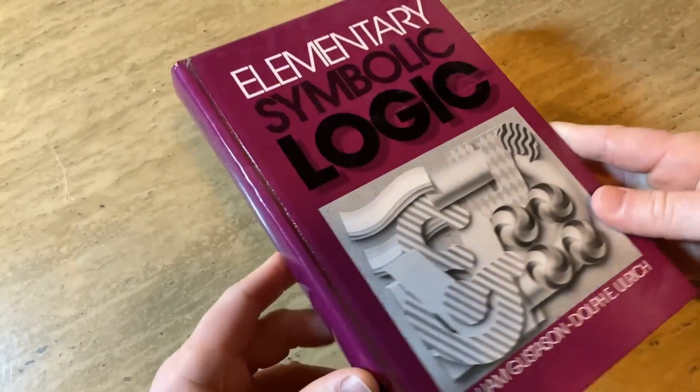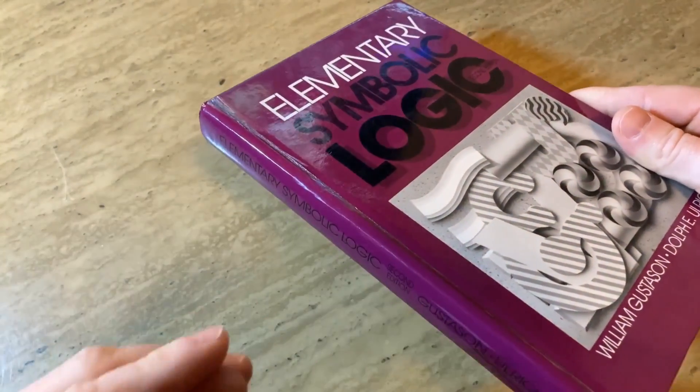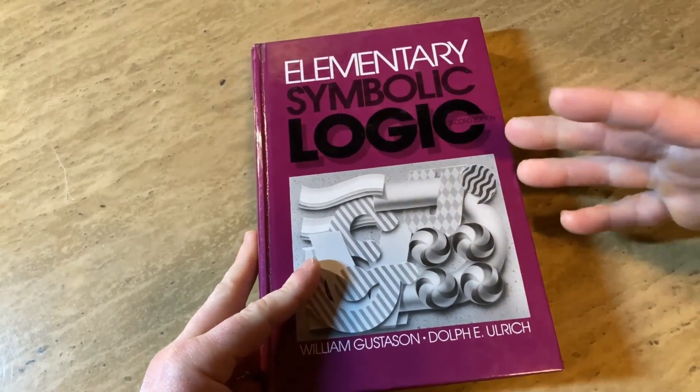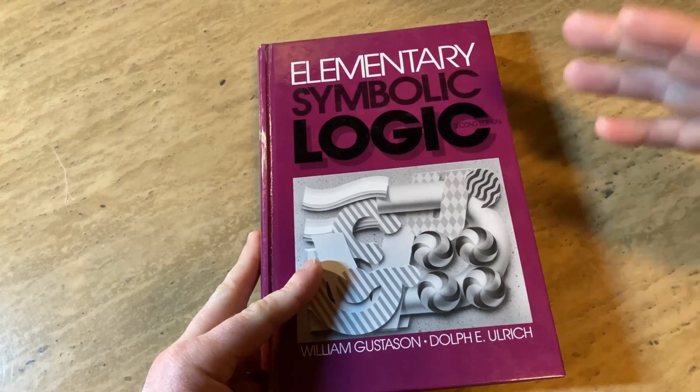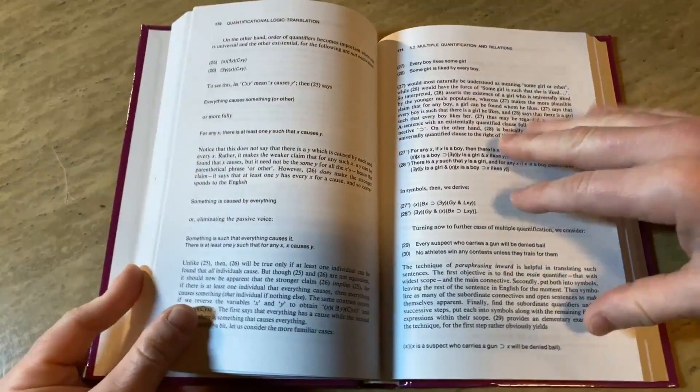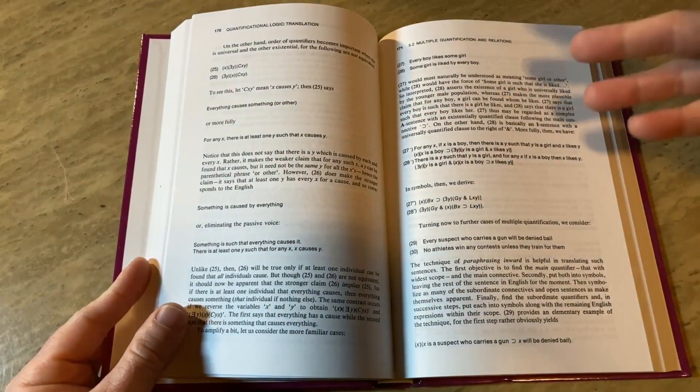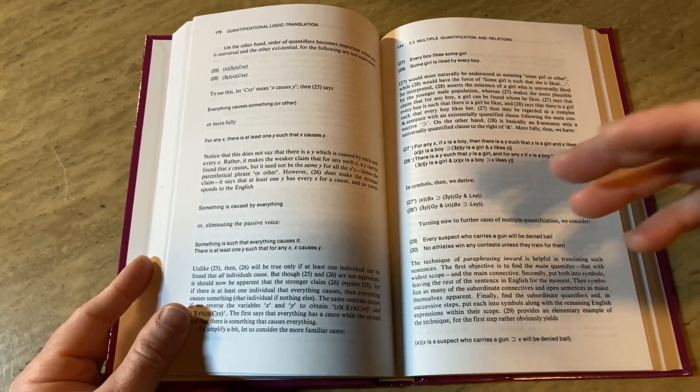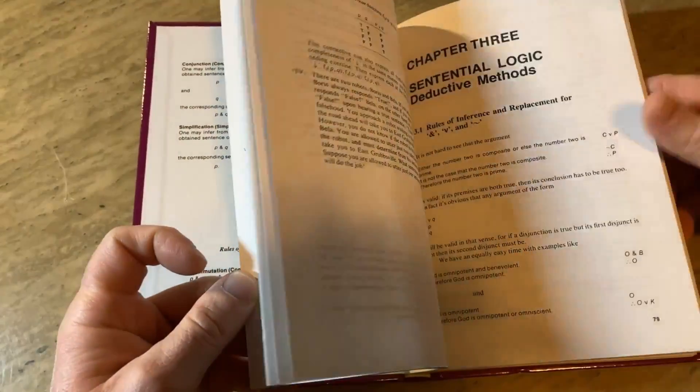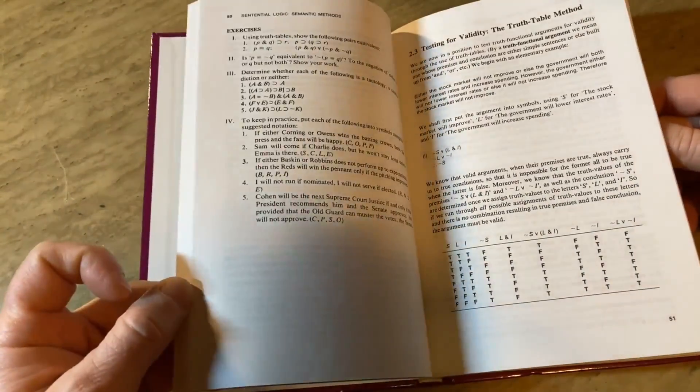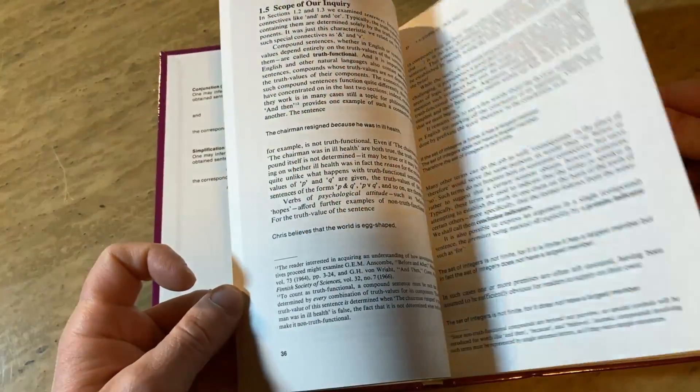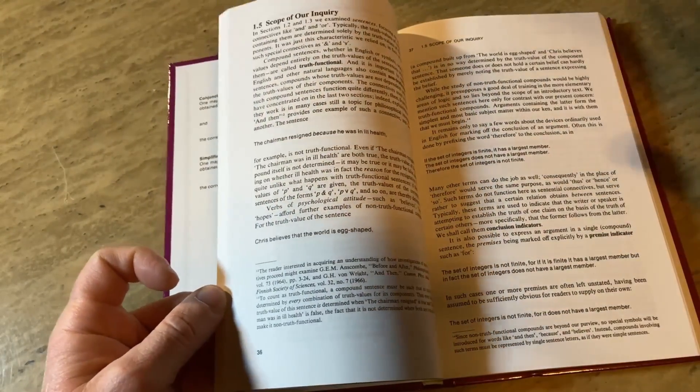Most people study some logic when they take either discrete mathematics in college or a proof writing class if you're a math major. And in both of those courses, you'll learn some logic, but then you'll jump into the paragraph style proofs, which is very important if you are thinking about pursuing a mathematics degree, or you just want to learn more mathematics for the sake of learning mathematics, and you want to learn to write proofs. Those books are probably a better choice.